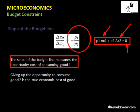Giving up the opportunity to consume good two is the true economic cost of good one. If you have two goods and you consume one more unit of good one, you must sacrifice some amount of good two. Therefore the true economic cost of good one is the opportunity to consume good two — that is the opportunity cost of consuming good one.